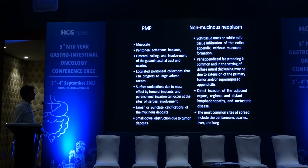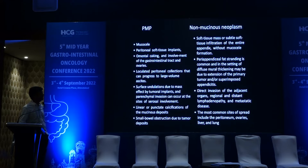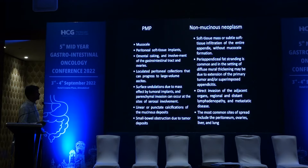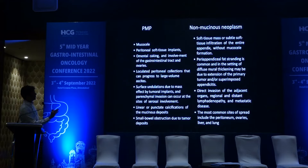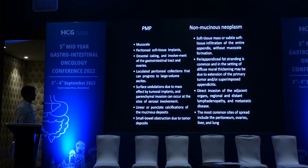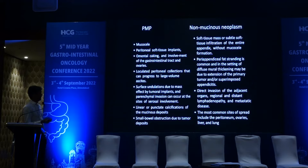These are the criteria for PMP: small bowel obstruction, most of the time closed-loop obstructions in PMP. Whereas in non-mucinous neoplasms, these are soft tissue mass-like lesions or subtle soft tissue infiltration of the entire appendix without mucocele formation. Remember: in non-mucinous neoplasm you will not see any mucocele formation. Peri-appendiceal fat stranding is one of the key features, along with diffuse mural thickening around the lesion. Involvement within the adjacent terminal ileal loops or cecum will be seen, and most of the time they are mistaken for appendicitis or appendicular lump if it is a localized non-mucinous neoplasm.